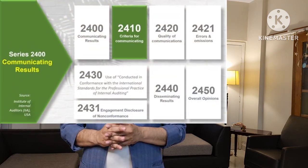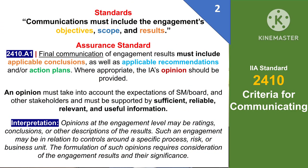The second standard is 2410 which is regarding criteria of communicating. The basic requirement of the standard is that communications must include the engagement's objective, scope and results. As per assurance standard A1 of 2410, final communication of engagement results must include applicable conclusions as well as applicable recommendations or action plans. Where appropriate, the internal auditor's opinion should be provided. An opinion must take into account expectations of senior management, board and other stakeholders, and must be supported by sufficient, reliable, relevant and useful information.